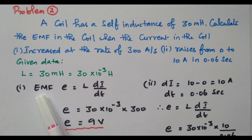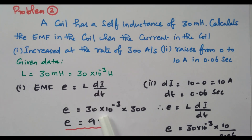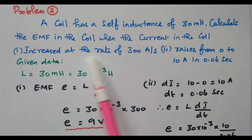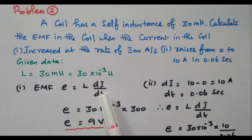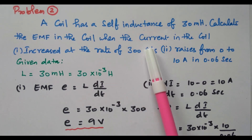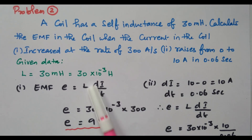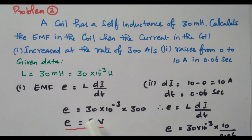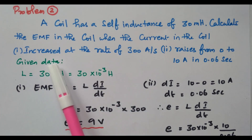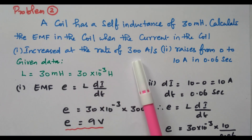Using E = L × di/dt. For the first case, di/dt is directly given as 300 ampere per second. So E = 30 × 10⁻³ × 300 = 9 volts. For the first case, the EMF induced is 9 volts, when current is increased at the rate of 300 ampere per second.